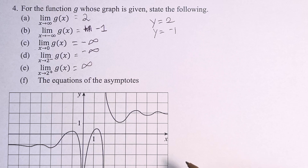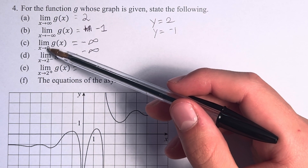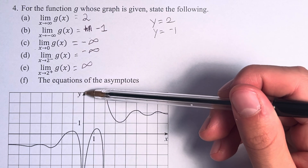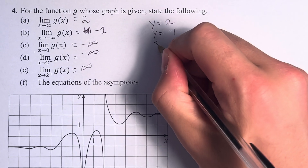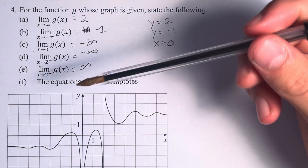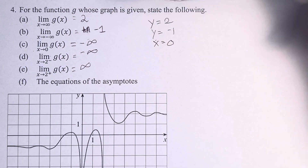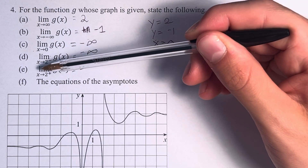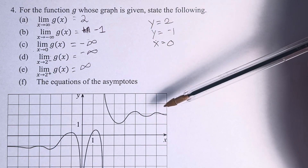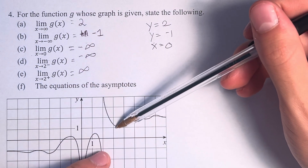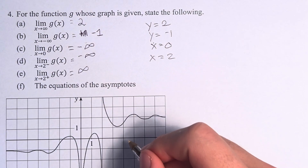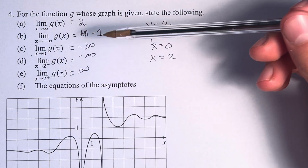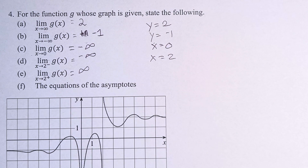We also have some vertical asymptotes. As x approaches 0, the function approaches negative infinity — we can think of this as a line right through this function; it's getting closer and closer but never reaching it, so x equals 0 is a vertical asymptote. Another one: the limit as x approaches 2 from the left and the right don't agree, but they both exist — the function goes off to infinity or negative infinity, so it has asymptotic behavior around it, and x equals 2 is another asymptote. Therefore, we have now found the values of the limits and the asymptotes for this particular function.